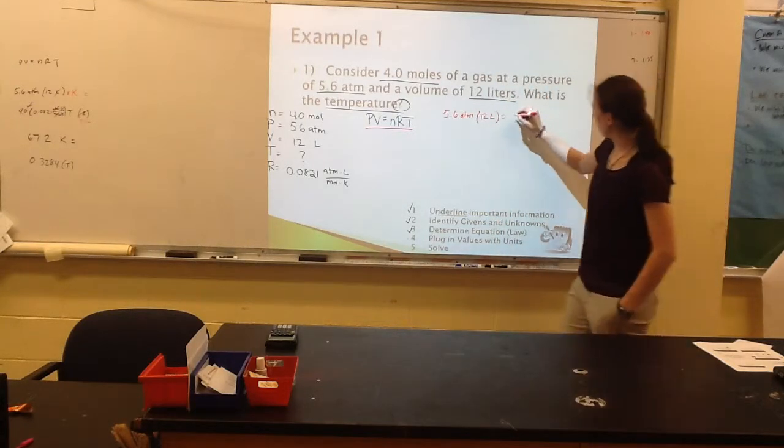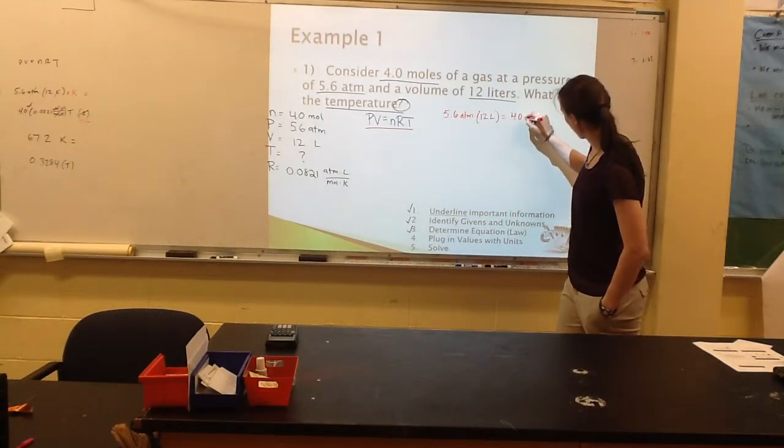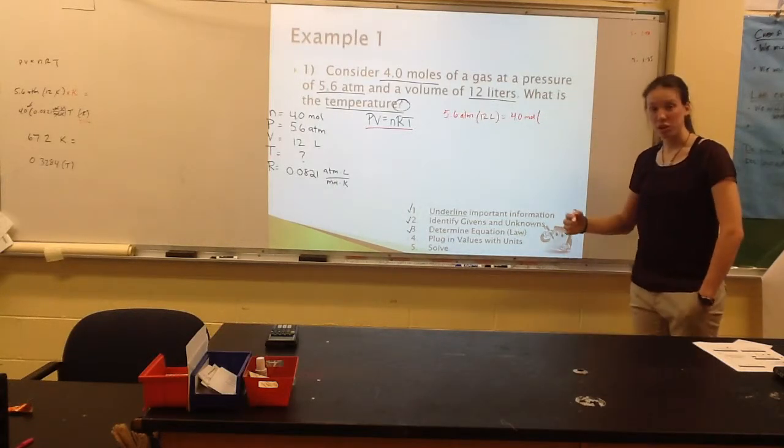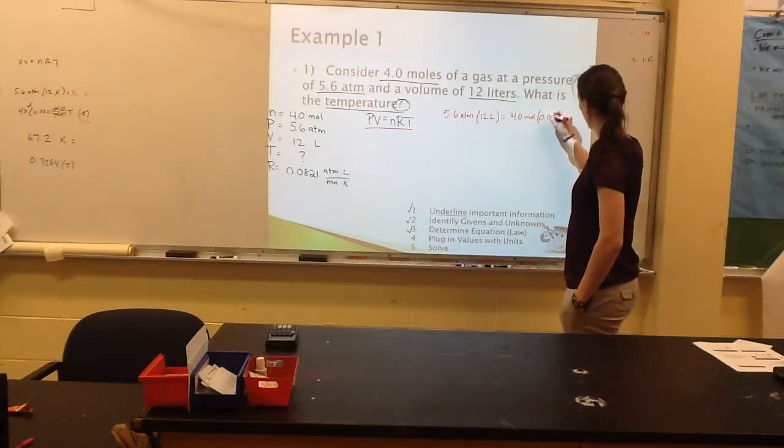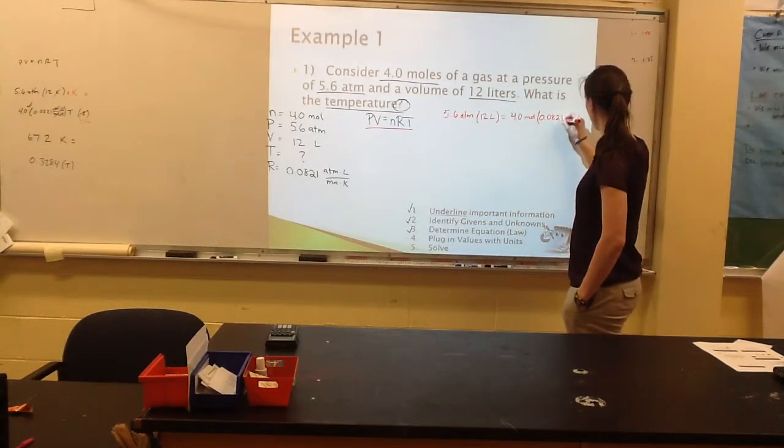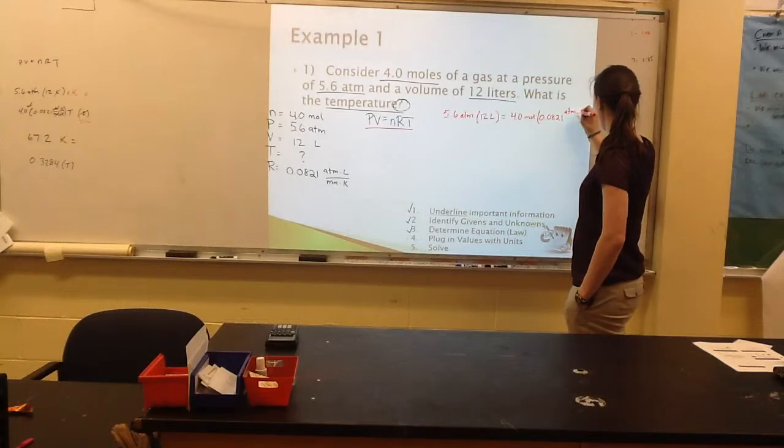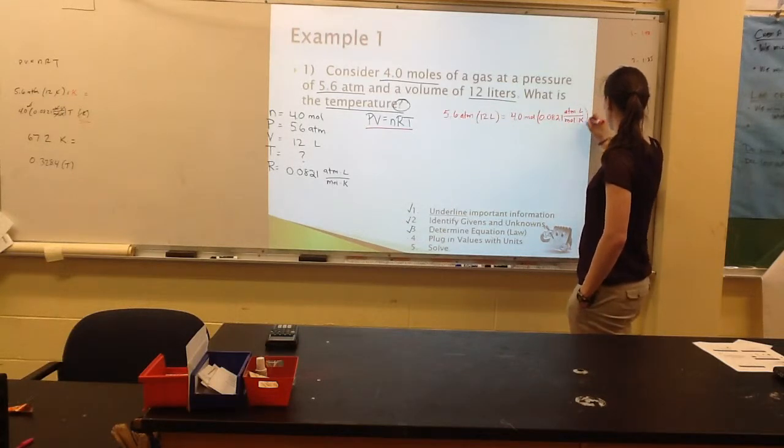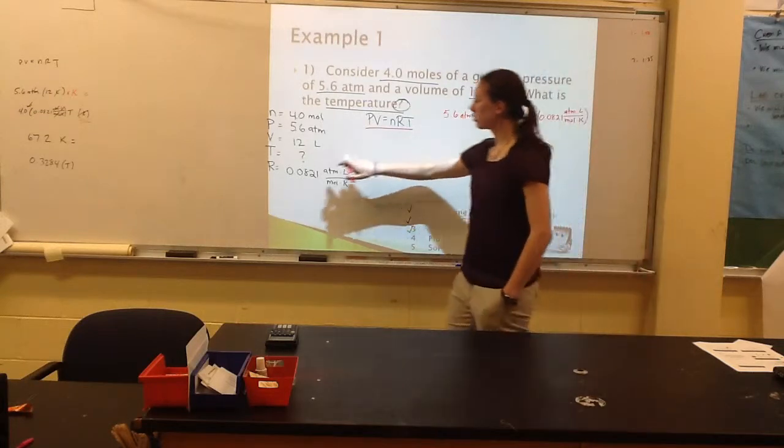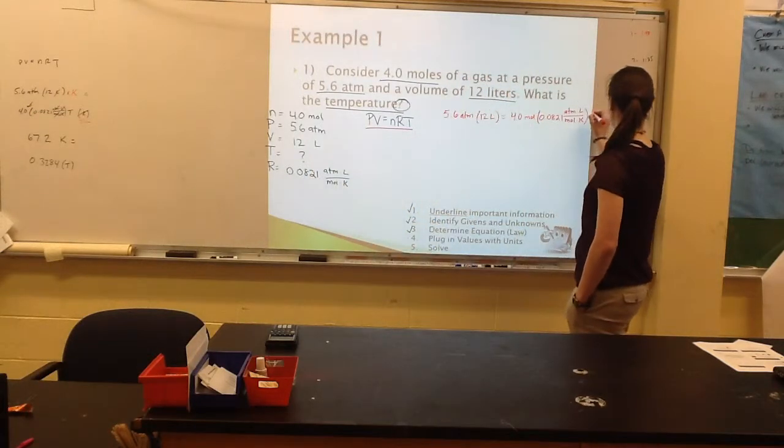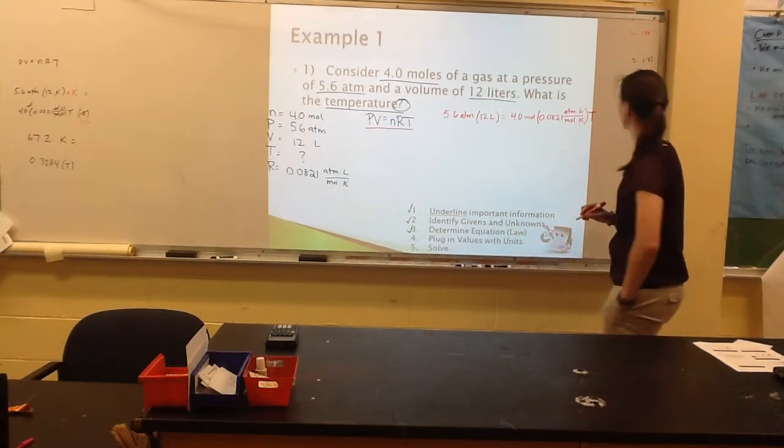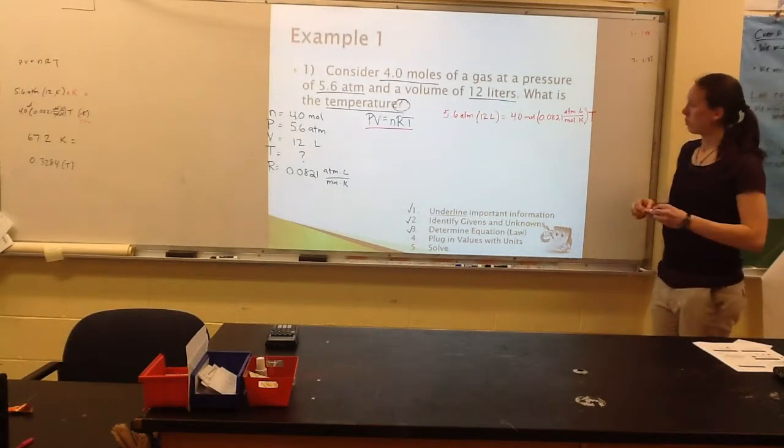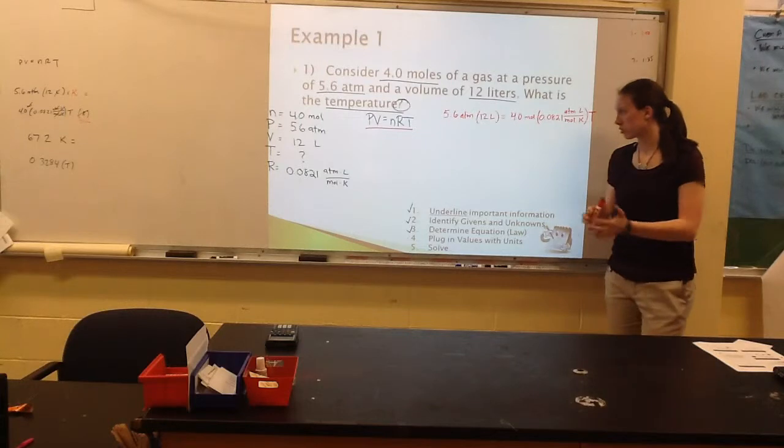My number of moles is 4.0. I've got my R value, which I'm going to plug in with all of my units still. 0.0821 atm liters per moles per Kelvin. And lastly, my T, which is unknown. I get to keep it as a variable. All right, so I've just plugged in my pressure, volume, moles, my R, and my T.